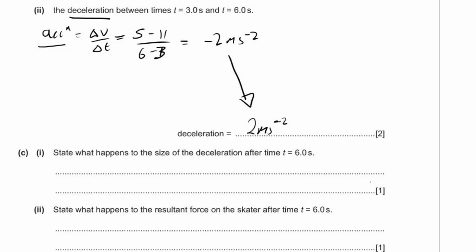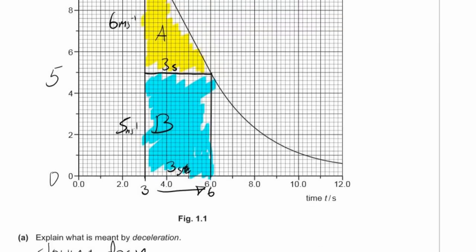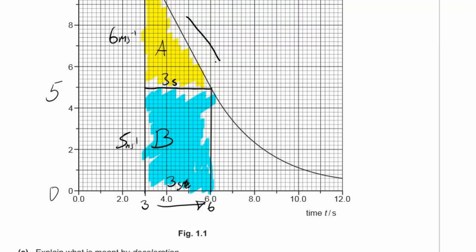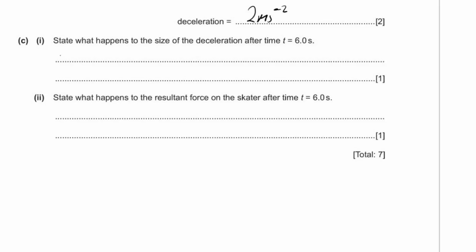Part C asks what happens to the size of the deceleration after t equals six seconds. Looking at the graph, it's slowing down rapidly up to six seconds, but after that the gradient gets less and less, so the deceleration gets smaller and reduces. For the resultant force: F = ma. If the acceleration is reducing and mass remains constant, then the force is also reducing.